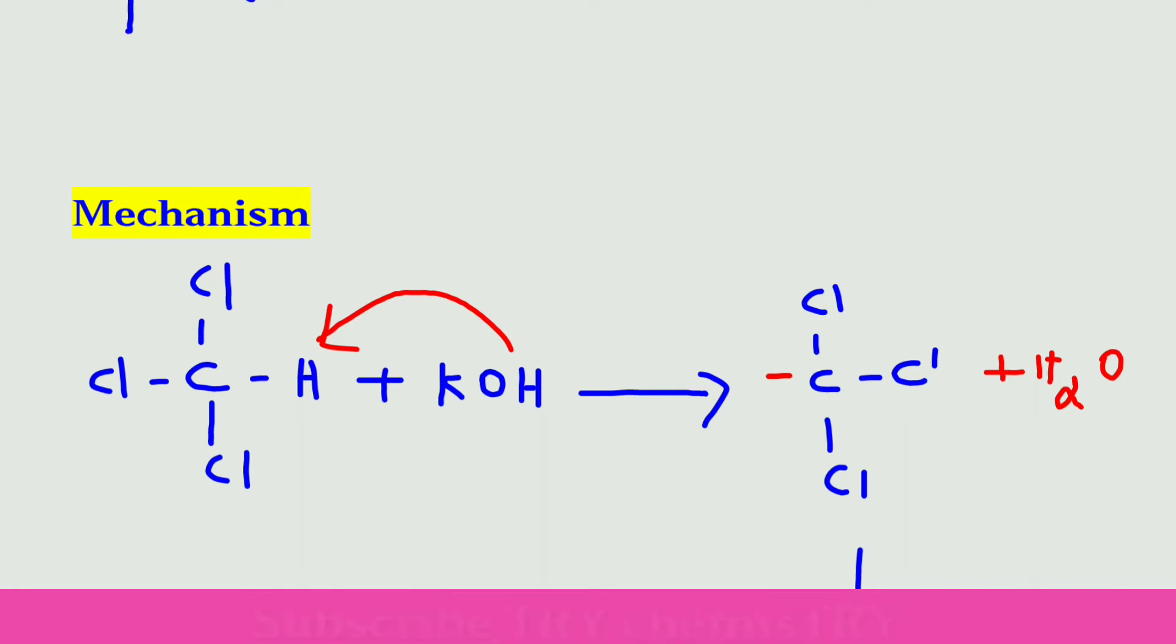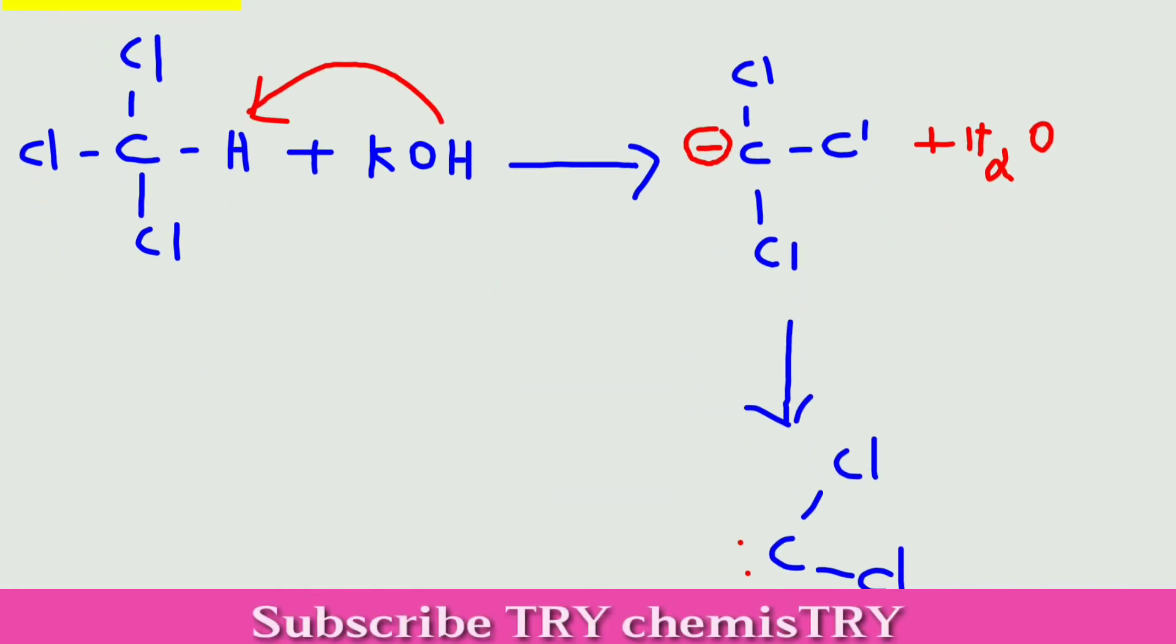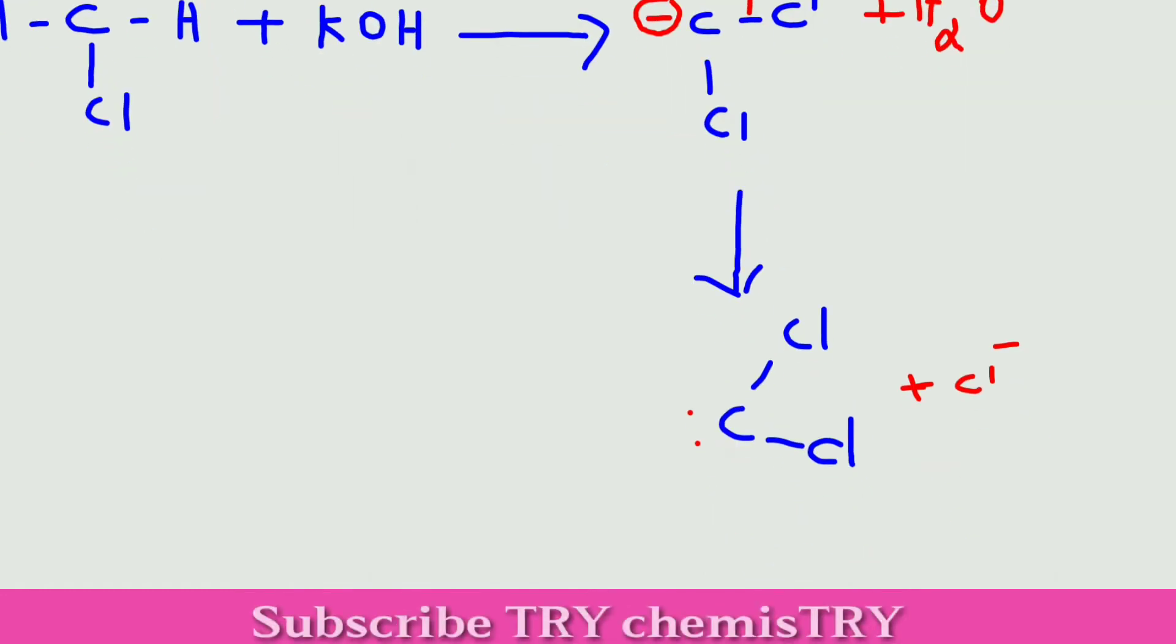After removal of water molecule, we can get the carbene ion. In the next step, one of the chlorine atoms is removed in the form of Cl minus. After removal of Cl minus, we can get the lone pair of electrons in the carbon dichloride.